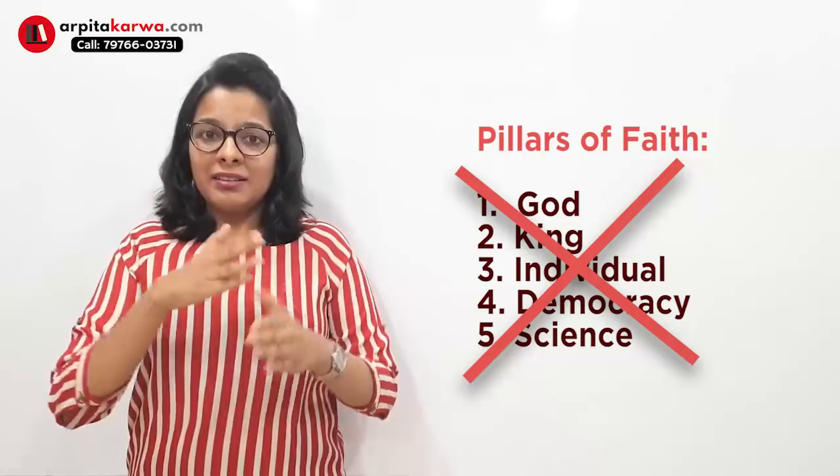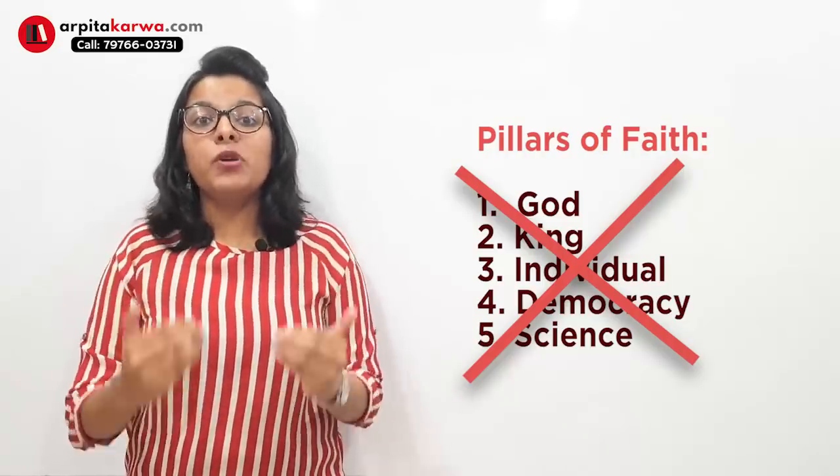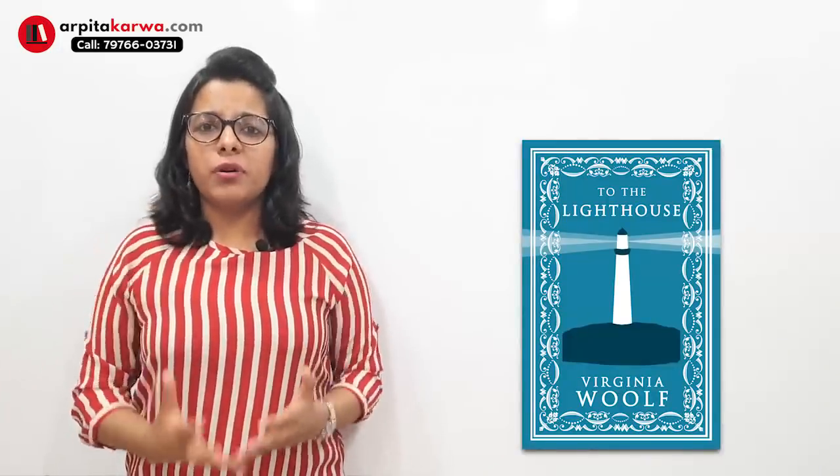This socio-economic background helps us understand why writers like James Joyce, T.S. Eliot, Matthew Arnold, and Virginia Woolf wrote what they did. Despite the shaken pillars of faith, the modern man of the 1920s and 1930s still believed that solutions were possible. A search for solutions was a central theme in modernist literary works. However, situations kept worsening — the post-World War I period brought the Great Depression.